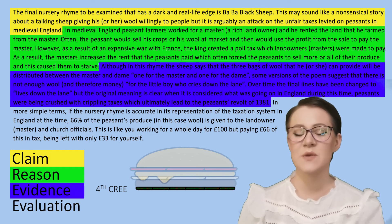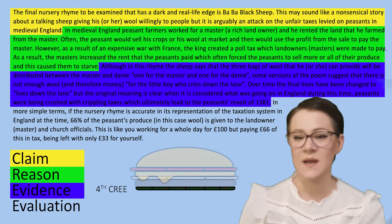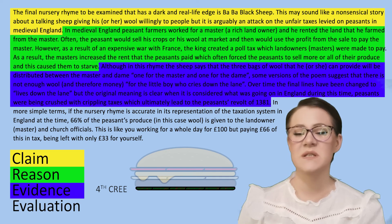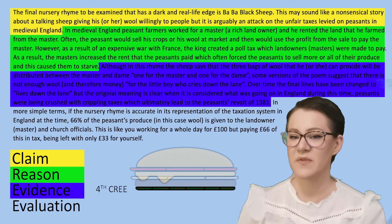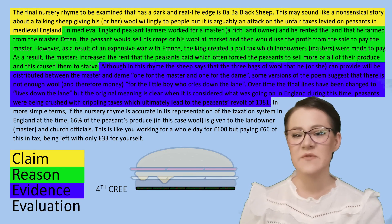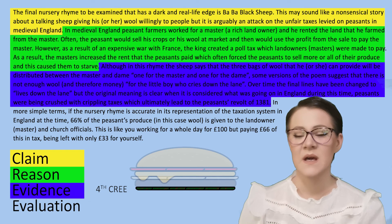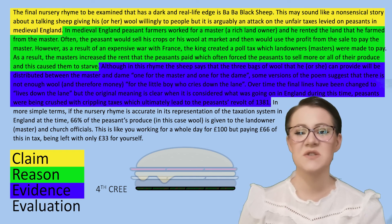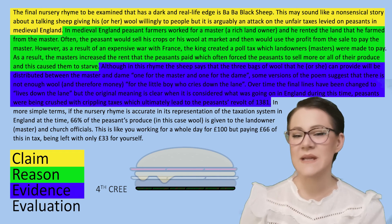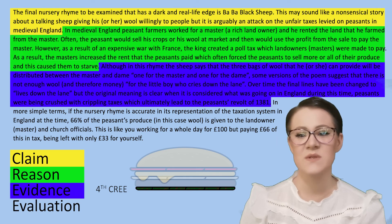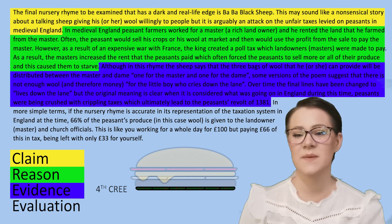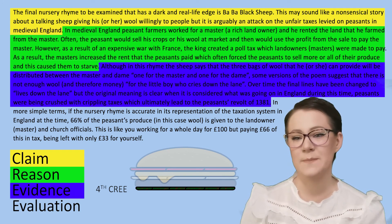Although in this rhyme the sheep says that the three bags of wool that he or she can provide will be distributed between the master and the Dame — one for the master and one for the Dame — some versions of the poem suggest that there is not enough wool, and therefore money, for the little boy who cries down the lane. Over time the final lines have been changed to 'lives down the lane', but the original meaning is clear when it is considered what was going on in England during this time. Peasants were being crushed with crippling taxes, which ultimately led to the Peasants' Revolt of 1381.